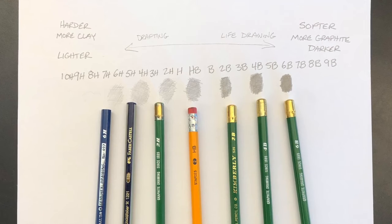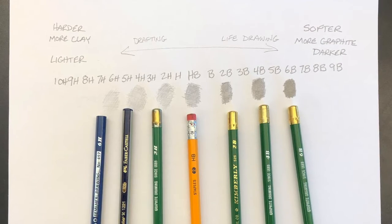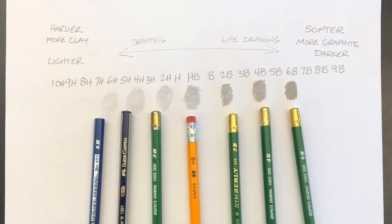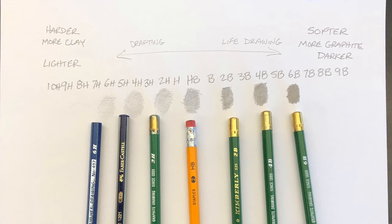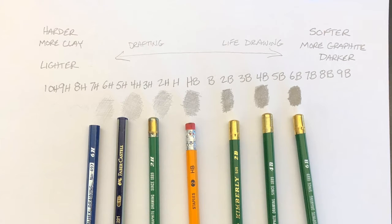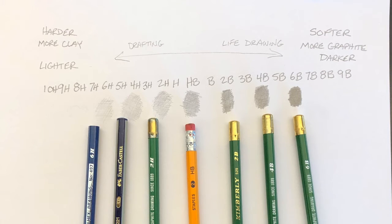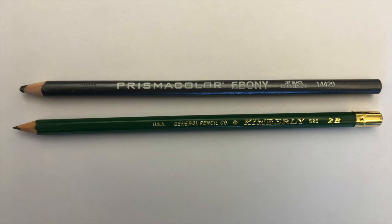Architectural drawings needing incredible detail and crisp sharp lines often use pencils in the H range. Artists doing life studies and full value range drawings from light to dark tend to use pencils in the B range. When doing life drawings I usually use pencils from a 2H to a 6B — other artists might pick a different range, but usually it's heavy on the darks. The Prismacolor Ebony pencil has a clay and graphite mixture approximately equal to a 2B pencil, but the diameter of the lead is very large and allows you to apply quite a bit of it to your paper.